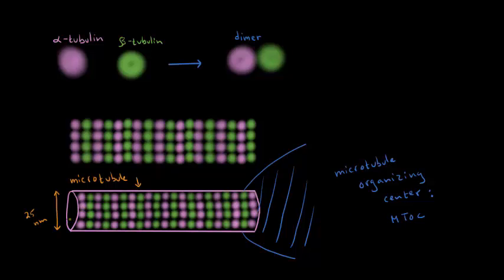At the other end, it's quite interesting: dimers can be added very quickly, making the microtubule longer, or dimers can be removed, making it shorter. So microtubules are dynamic — they can change length very rapidly. As we'll see, this ability to lengthen or shorten is critical for microtubules to fulfill their various functions.